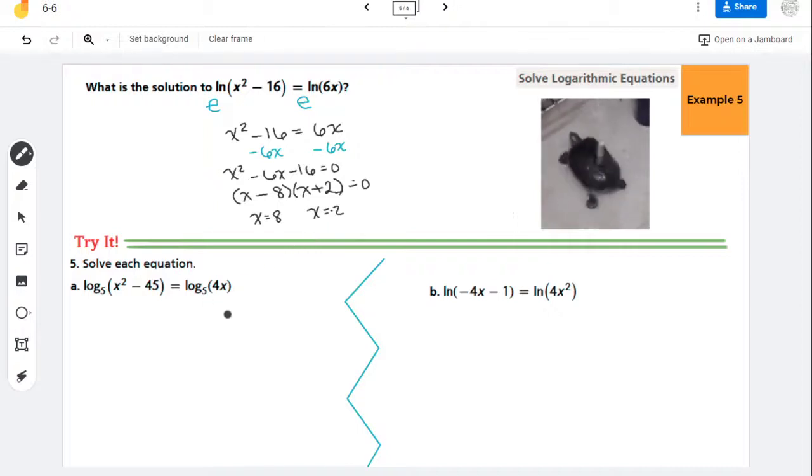And with logarithmic equations, you generally want to make sure that you're checking your work, making sure that you're getting the right answers. So that's what I'm going to do here on the side. Let's start with checking x = 8. So if x = 8, 8² is 64. And here, 6 times 8 is 48. And 64 - 16 is 48. So I'm left with ln(48) = ln(48). So that's good.